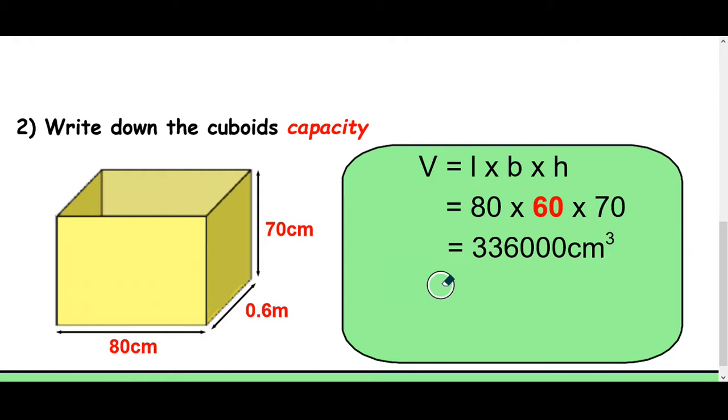Okay, finally, we could change it into milliliters. So it's exactly the same number of milliliters. And with this, because it's so big, I would change it into liters. So divide it by 1000. It's easy. It's got three zeros in the end. So divide that by 1000. You'll get 336 liters.